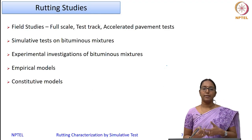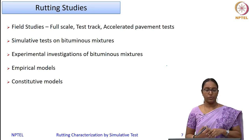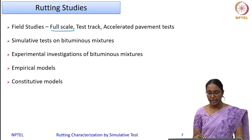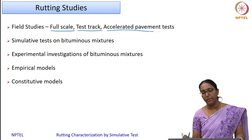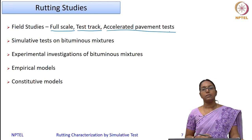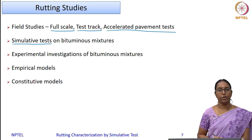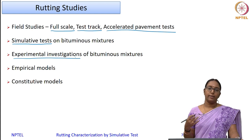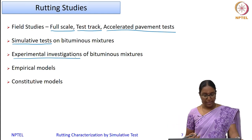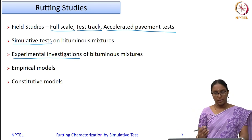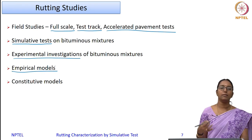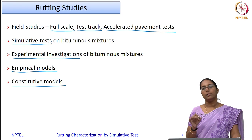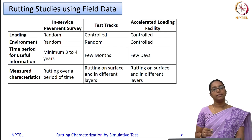Now, how to study rutting happening in bituminous pavements as well as bituminous mixtures? There are various approaches. The first one is field studies — you can do a full-scale field study or an in-service pavement study, test tracks, or accelerated pavement test studies. For bituminous mixtures you can have simulative tests in the laboratory or experimental investigations using loads and conditions prevailing in the field. Additionally, using such information you can have empirical models or constitutive models which capture the mechanistic behavior of the material to predict rutting behavior.